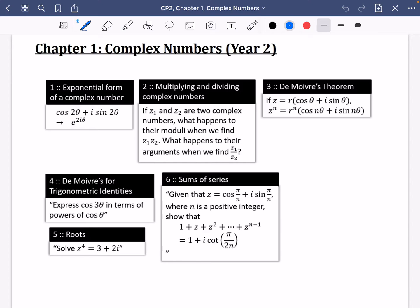Complex numbers in Year 2 builds on loads of the things from Year 1, but it becomes significantly harder. First we start by looking at a new form, the exponential form. We remind ourselves of some properties of multiplying and dividing, and this is where things start getting trickier when we look at De Moivre's Theorem. We do some much more complicated things to do with sums of series and roots as well.